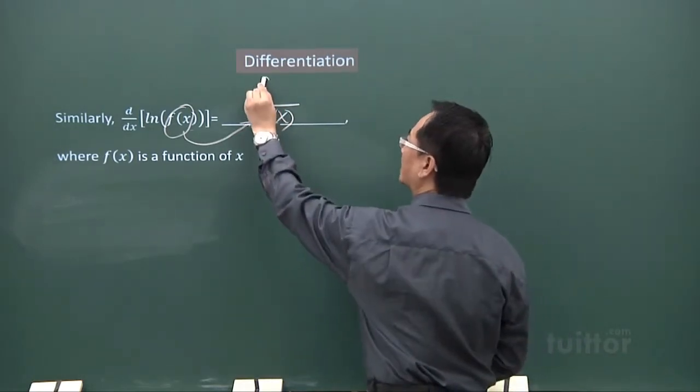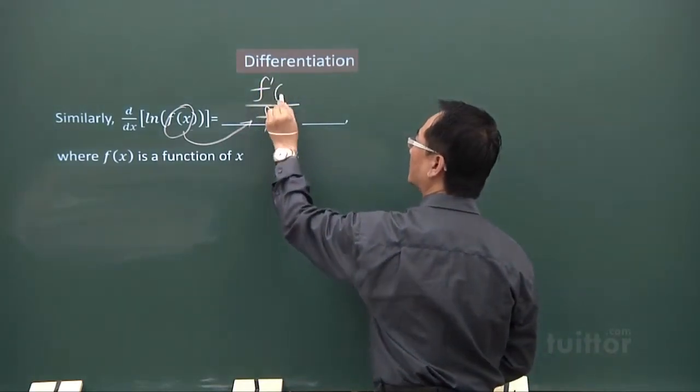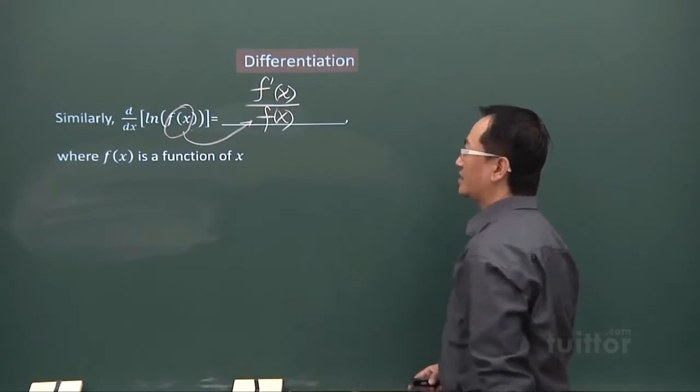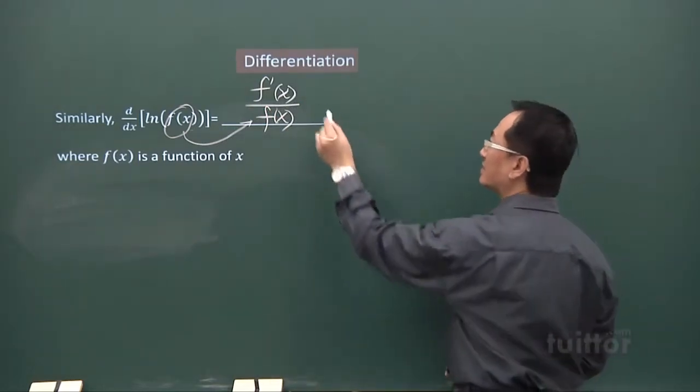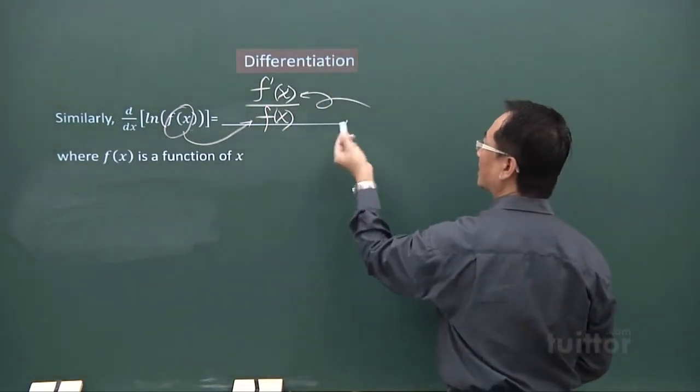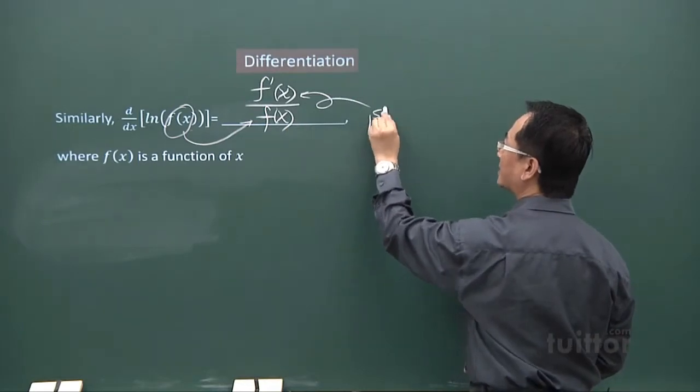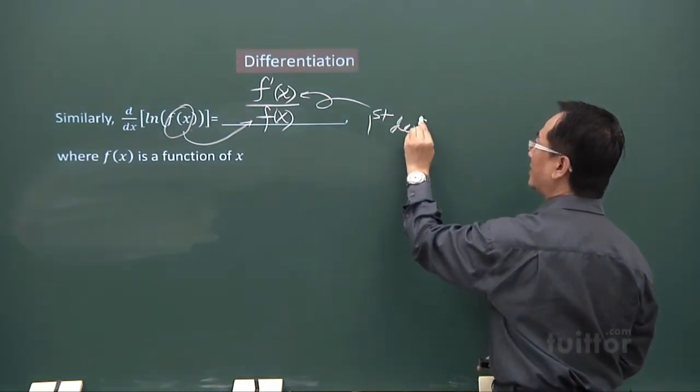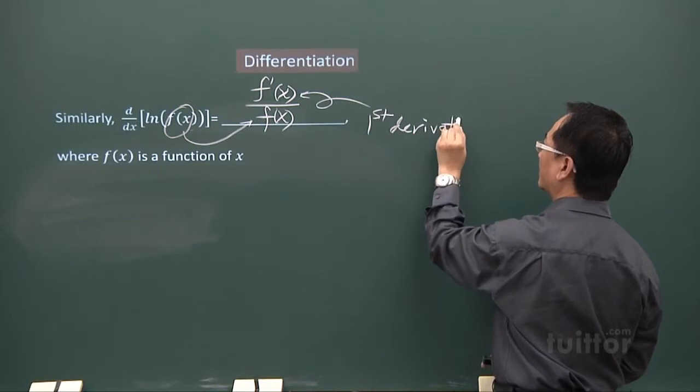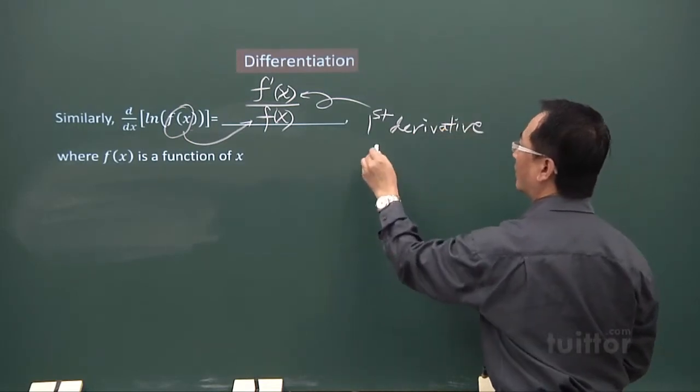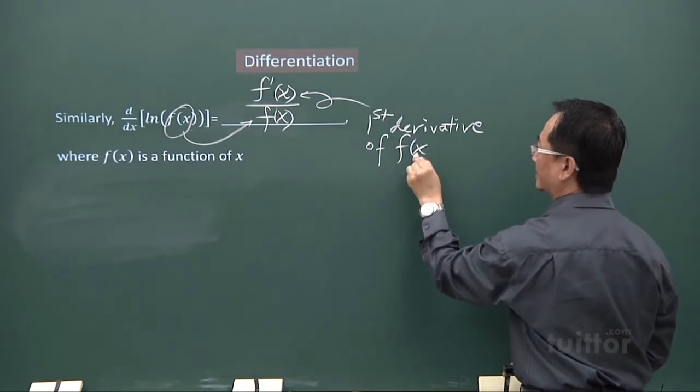The way you write it is f dash x. That means the first derivative of f(x).